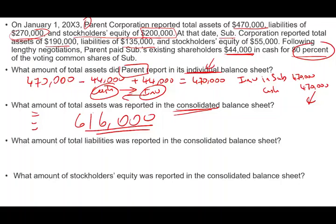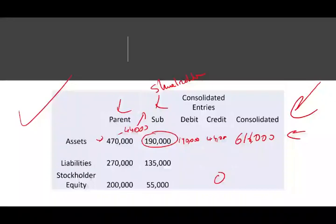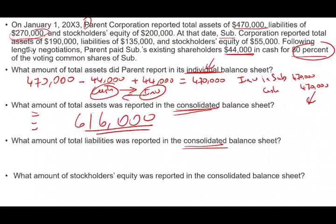Question 3: What amount of total liabilities was reported in the consolidated balance sheet? You should know this right away — liabilities are easy because you don't have to worry about the cash and investment account. You just add them both up: 270 plus 135 equals $405,000. Although you bought 80% of the sub, you consolidate 100% because you are in control.